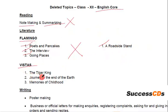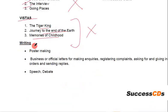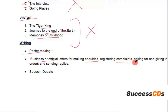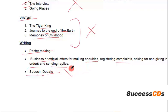From the Vistas book, 3 chapters have been deleted: The Tiger King, Journey to the End of the Earth, and Memories of Childhood. In the writing section, the following topics are deleted: Poster Making, Business or Official Letters for Inquiry, Complaint Letter, Asking for or Giving Orders (Order Letter), Sending Reply — these types of letters are deleted. Speech and Debate are also deleted. So quite a lot of syllabus has been deleted from English.